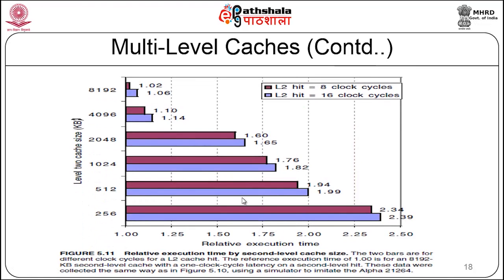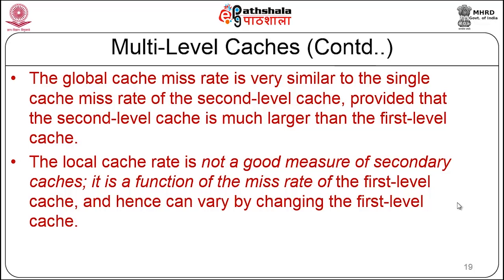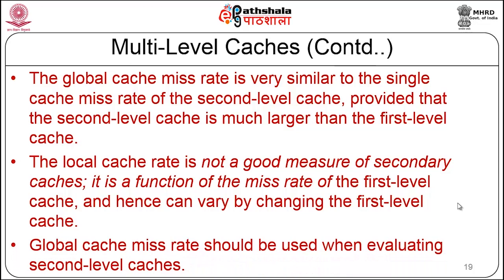This also gives a feel for how relative execution times differ as you go for multiple levels of caches — with L2 hit in 8 clock cycles versus L2 hit in 16 clock cycles. The global cache miss rate is very similar to the single cache miss rate of the second level cache, provided the second level cache is much larger than the first level cache. The local cache miss rate is not a good measure of secondary caches; it is a function of the miss rate of the first level cache and can vary by changing the first level cache. That is why global miss rate should be used when evaluating second level caches.